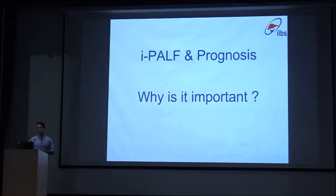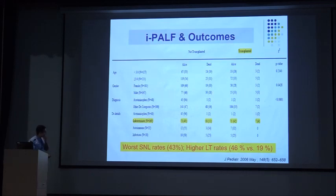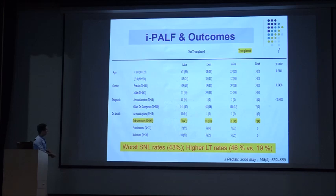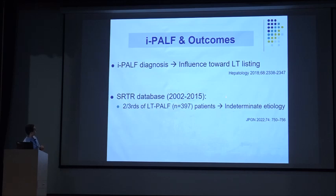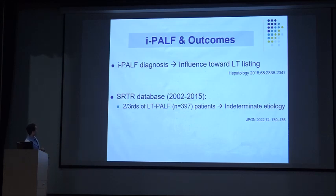Why is it important? Does indeterminate ALF have any prognostic relevance? The first study from the ALF study group found that indeterminate patients had worse survival with native liver and higher liver transplantation rates compared to diagnosed ALF. Not knowing the diagnosis means you are skeptical to give proper prognosis and will push patients towards transplant. This has been clearly shown — and in the SRTR database, almost two thirds of pediatric ALF patients who underwent transplant were of indeterminate etiology.